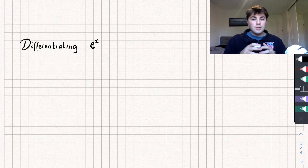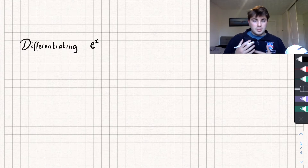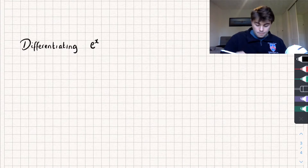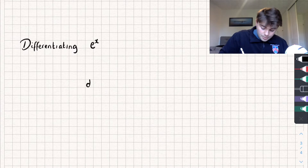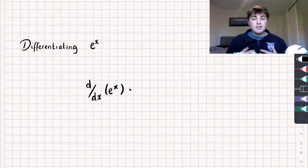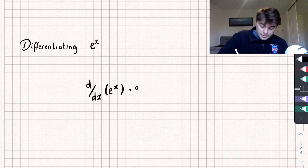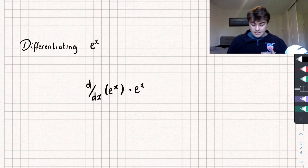Hello, in this video I'm going to teach you everything you need to know about differentiating e to the x. I'll timestamp below the different parts of the video so you'll be able to skip to the part you're most interested in. The best place to start is: what is the derivative of e to the x? E to the x has this special rule where the derivative of it is just equal to the function itself — the derivative of e to the x is just e to the x.